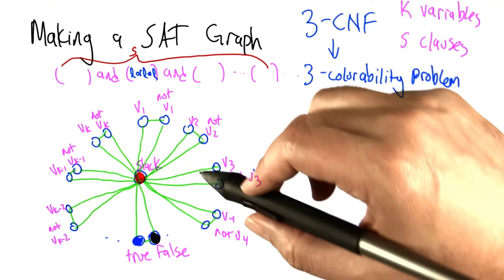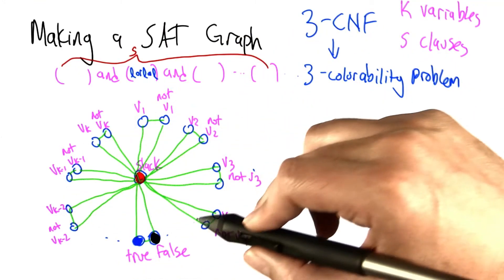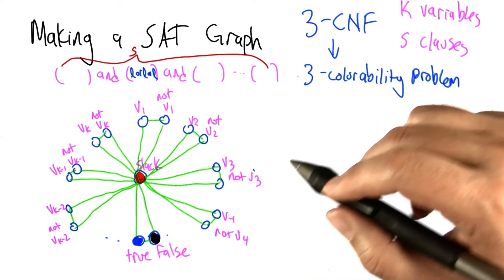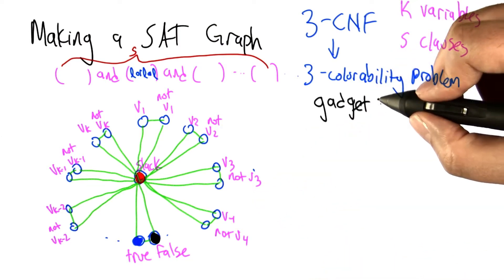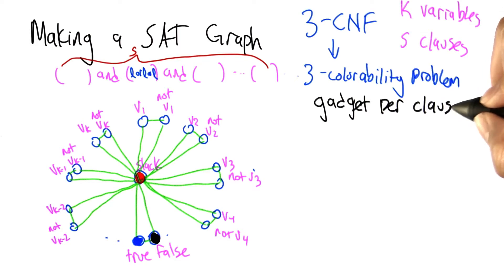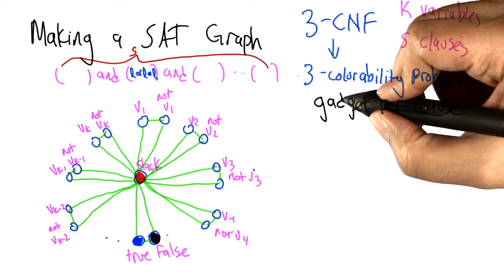Now we have to introduce some extra constraints so that this truth assignment has to be satisfying. And to do that, we're going to introduce a set of nodes for each clause that is sometimes referred to as a gadget.